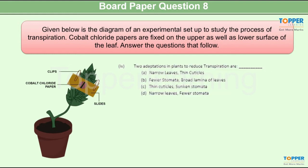Question 4. Two adaptations in plants to reduce transpiration are, and the correct answer is option D. Narrow leaves and fewer stomata. If the leaves are narrow the exposed part of the surface is also small and consequently transpiration is less. Fewer stomata, if there are lesser number of stomata obviously the rate of transpiration is also low.